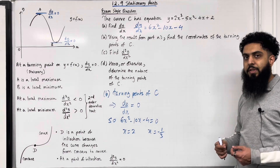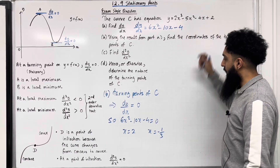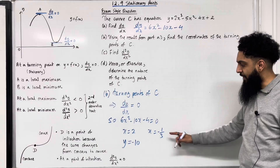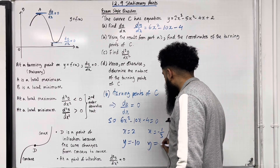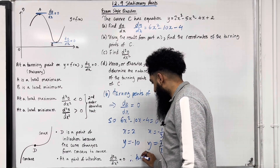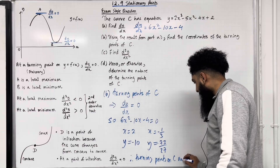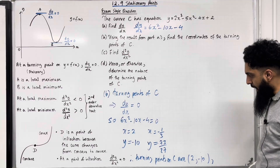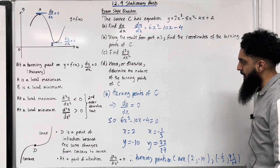Now I need to work out the corresponding y-coordinates. Substituting x = 2 into the y equation gives y = −10. Substituting x = −1/3 into the y equation gives y = 73/27. Therefore, the turning points on C are (2, −10) and (−1/3, 73/27). This completes Part B of the question.